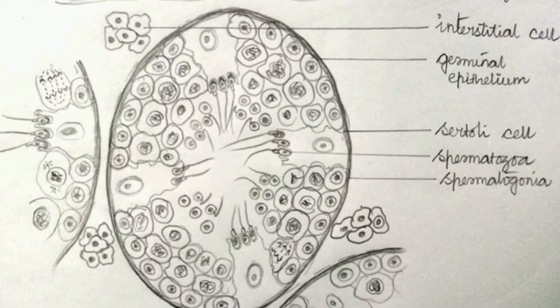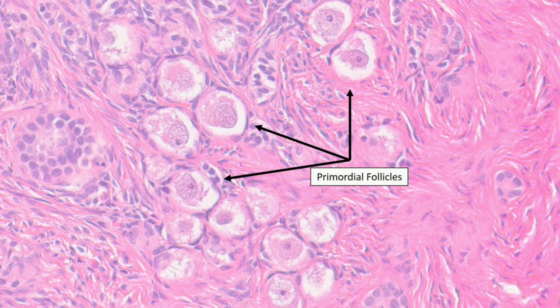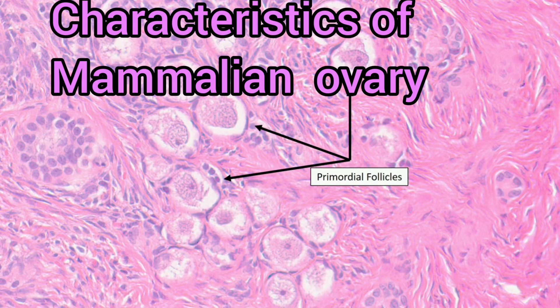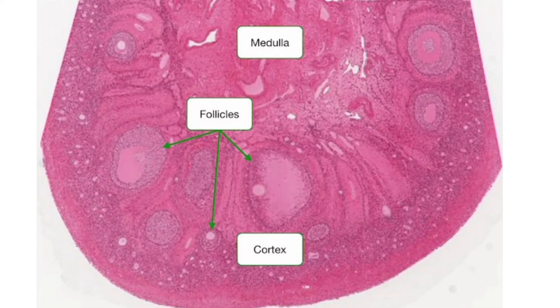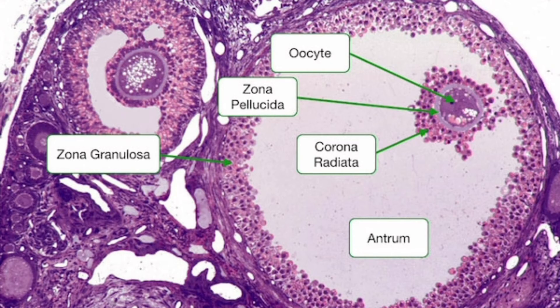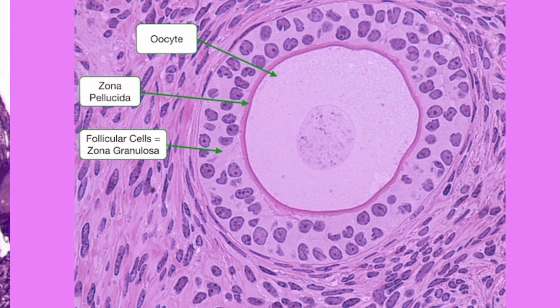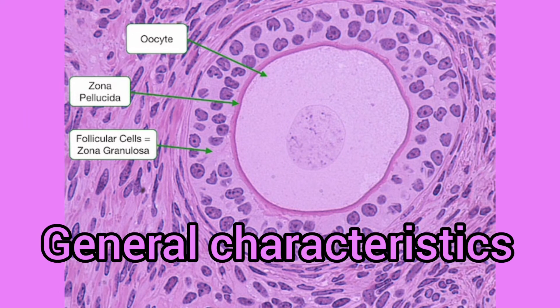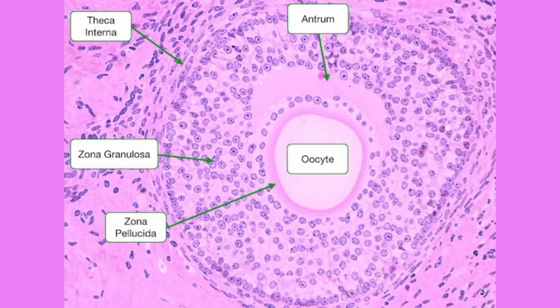The identifying characteristics of the TS of mammalian ovary: the presence of the Graafian follicle is the characteristic feature of mammalian ovary. Each Graafian follicle contains one ovum and a fluid-filled cavity called the antrum. The section of mammalian ovary shows a mass of tissues lined by germinal epithelium.